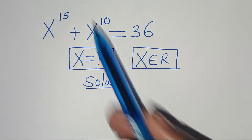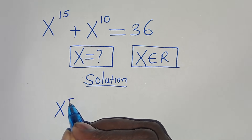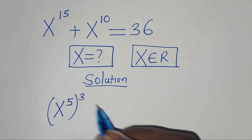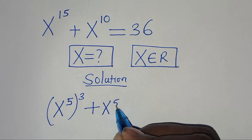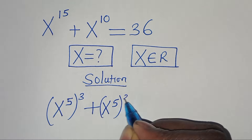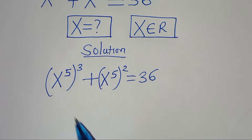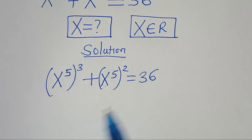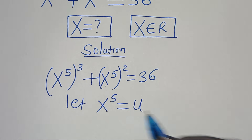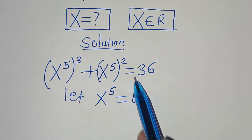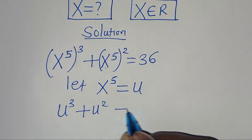We can express x to the power of 15 as x to the power of 5, raised to the power of 3, and x to the power of 10 as x to the power of 5, raised to the power of 2. This is equal to 36. Since x^5 appears in both terms, we let x to the power of 5 equal u, and substitute to get u^3 plus u^2 equals 36.